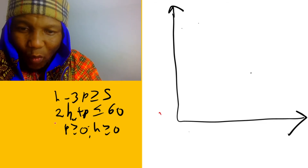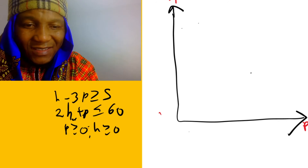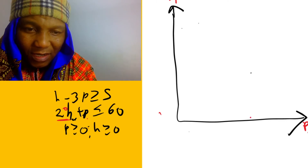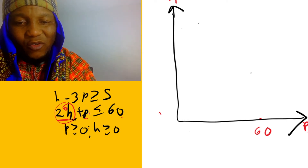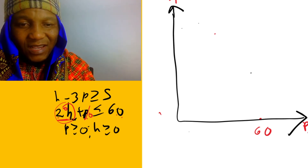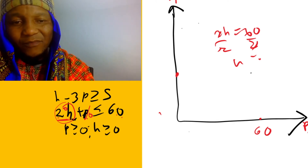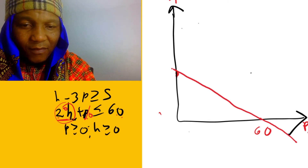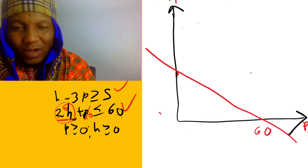Let's draw the graph. We'll represent all this information graphically. p is like x on the horizontal axis and h is like y on the vertical axis. Starting with 2h + p = 60: when p is the x-intercept, h equals zero, so p equals 60 — the line cuts at 60 on the p-axis. When h is the y-intercept, p equals zero, so 2h = 60, giving h = 30 — it cuts at 30 on the h-axis. We join those two points with a straight line.